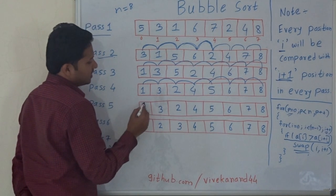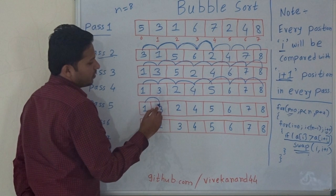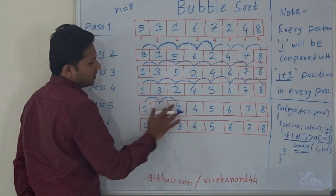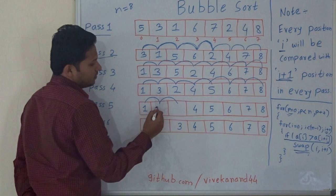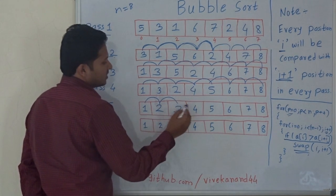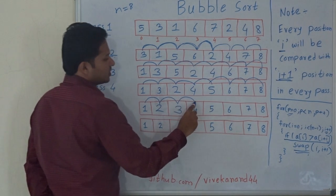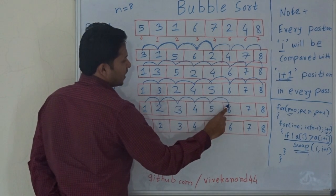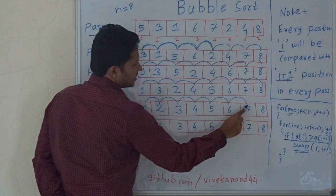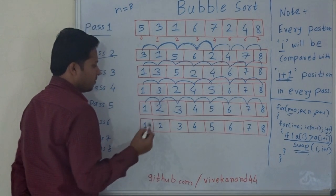Pass 5: 1 compared with 3 — no swap. 3 compared with 2 — yes, swap needed. 3 compared with 4 — no swap. 4 compared with 5 — no swap. 5 with 6 — no swap. 6 with 7 — no swap. 7 with 8 — no swap.